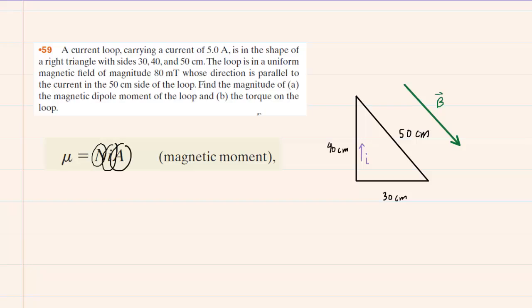Now, in this case, we have a right triangle representing our loop. So for the area, we would use the formula for the area of a triangle, which is one-half base times height. So we can rewrite the equation as mu equals n times i times one-half base times height.